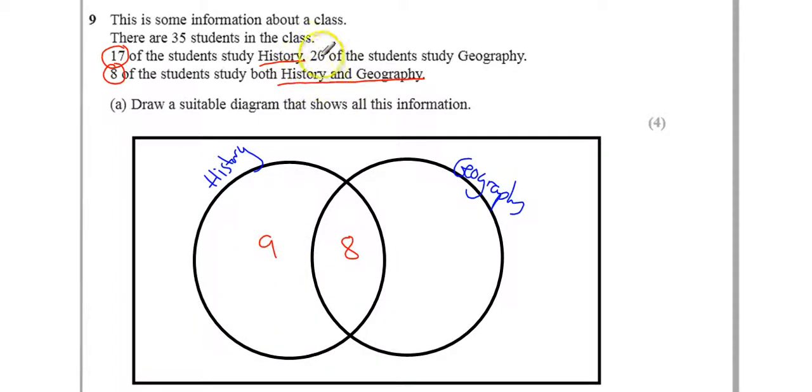And the same thing for geography. There's got to be 20 students in the geography circle. But we already have 8 in the middle in that overlap. So, there's got to be 12 there.